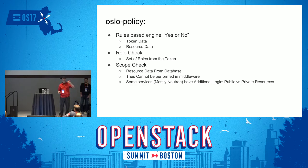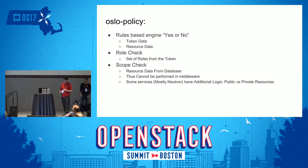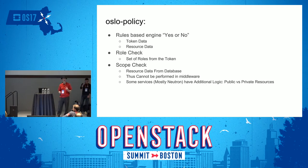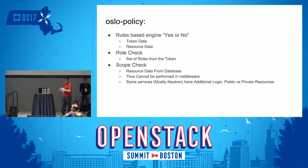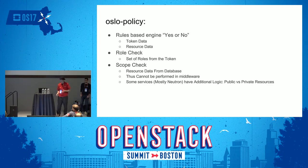That policy check is implemented by a library called Oslo Policy, which is a rules engine. It answers a yes-or-no question: do you have access to what you're trying to do, based on the token data and the resource data? Keystone doesn't know about the different resource types — it just says, based on this rule and the values you've given me, do you have access or not? It does a role check to see what roles are on the token, and also a scope check to see if the project on the token matches — these are two distinct things.